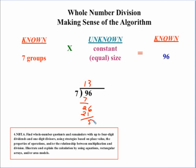So our answer would be 13 remainder 5 or 13 and 5 sevenths, depending on the form that you want the students to put the quotient in.